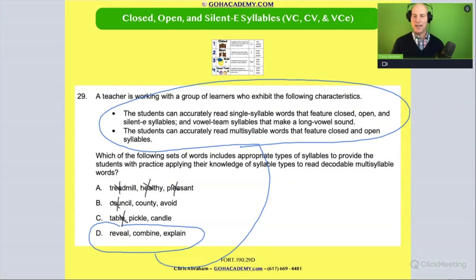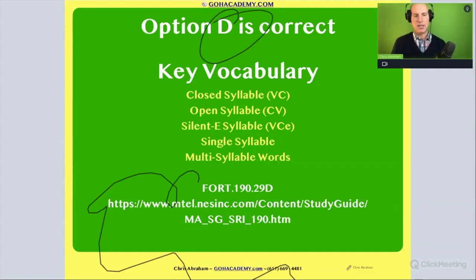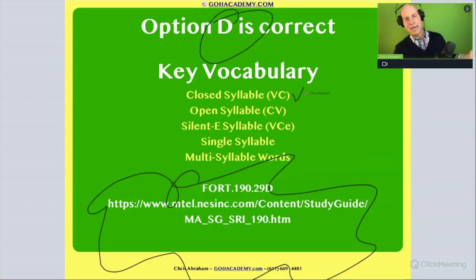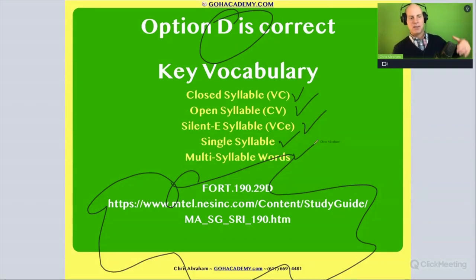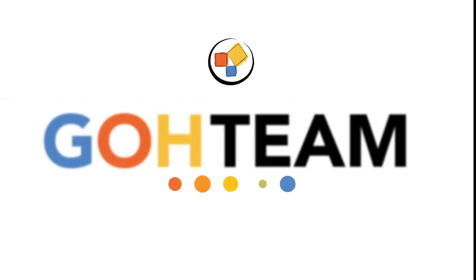Alright, great question team. This is from the Foundations of Reading test. Look at all the vocab: open syllables, closed syllables, silent E syllables, single syllables, multi-syllable words — and there should also have been vowel teams. Lots of great stuff here. Study it. Good push question. Thank you.